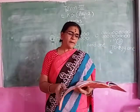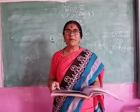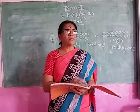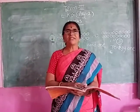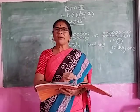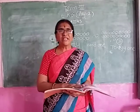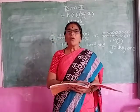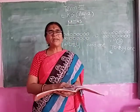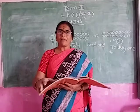Shall I say one more time? Two little dickie birds sitting on a wall. One named Peter, the other named Paul. Fly away Peter, fly away Paul. Come back Peter, come back Paul. Two little dickie birds sitting on a wall. One named Peter, the other named Paul. Fly away Peter, fly away Paul. Come back Peter, come back Paul.